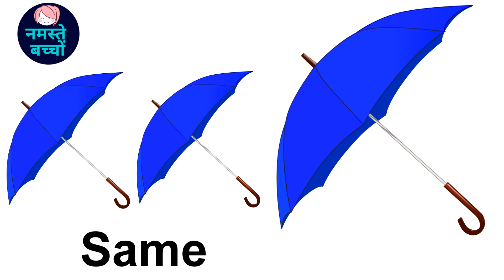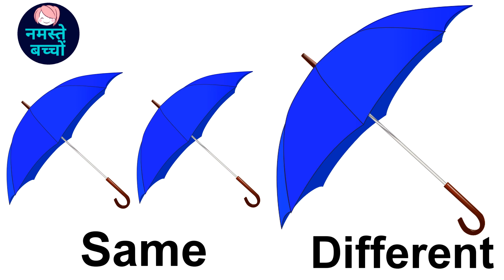Look at the other object — umbrellas. All the umbrellas are blue in color, but one umbrella is bigger than the other umbrellas, so we can say they are the same in color but different in size.